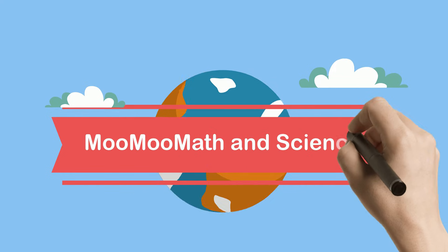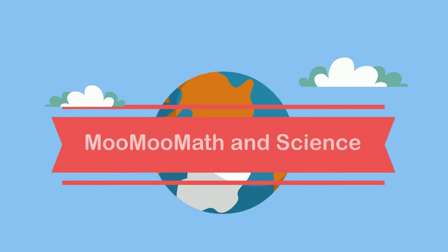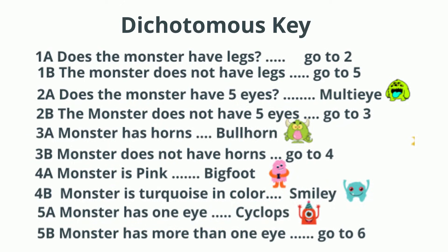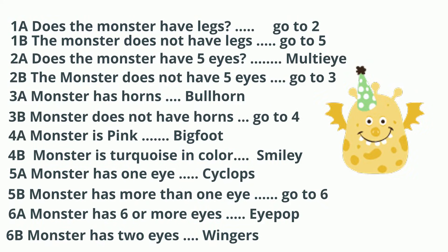Welcome to Moo Moo Math and Science. In this video let's learn how to use a dichotomous key. We'll look at seven monsters and try to identify three of them by name. The first rule to always keep in mind, no matter what organism or monster you have, you always start at 1a.